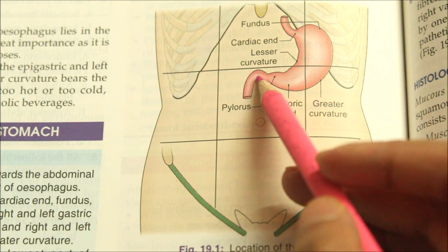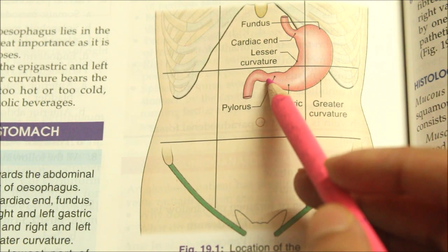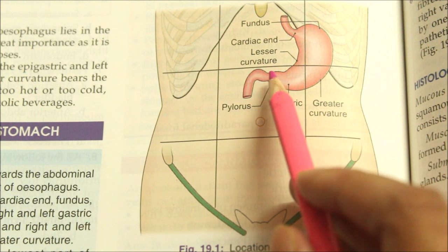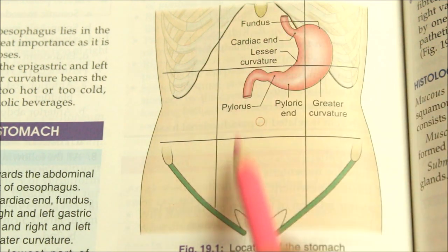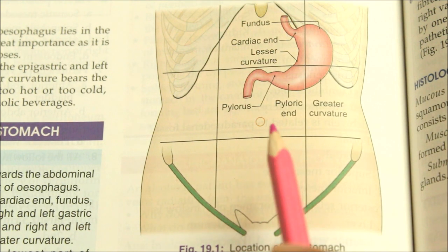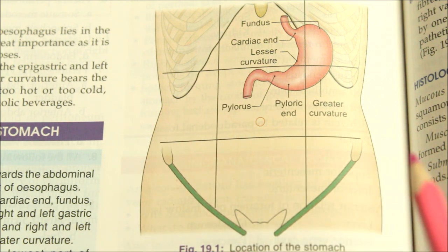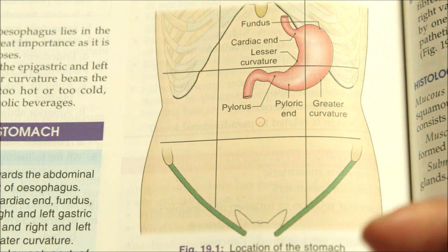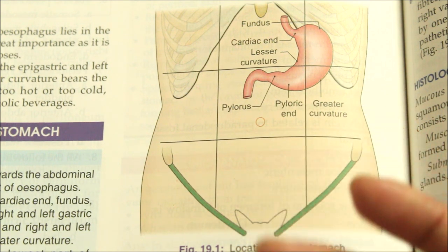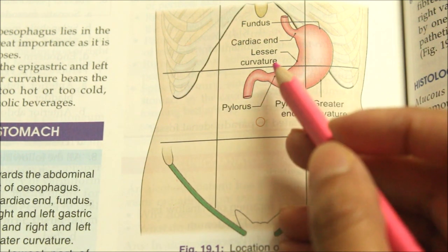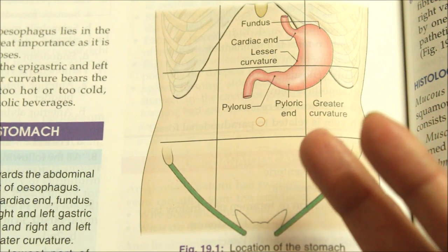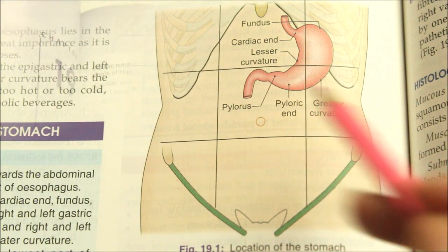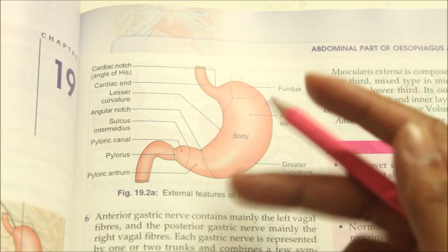The pyloric orifice opens into the duodenum. In an empty stomach in the supine position, it lies 1.2 centimeters to the right of the median plane at the level of the lower border of the first lumbar vertebra. Its position is indicated by a circular groove and by the pre-pyloric vein of Mayo.